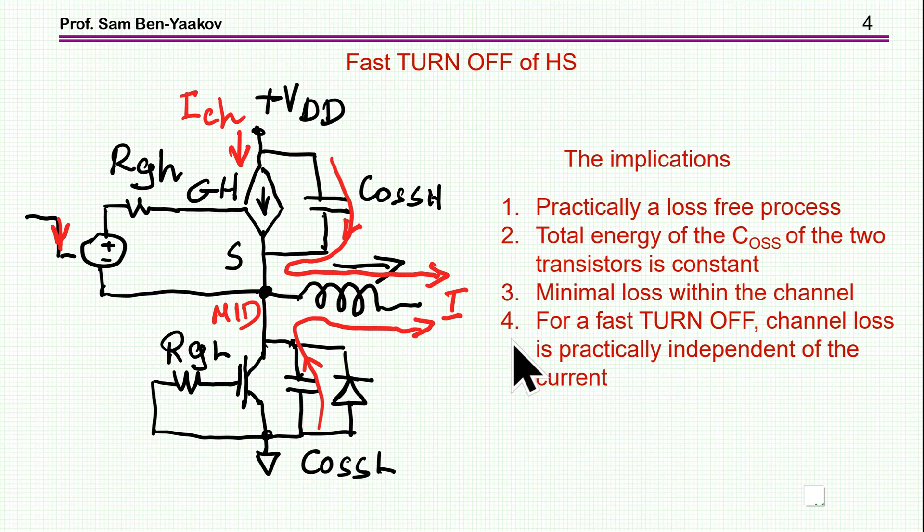For a fast turn-off, there is practically no losses in the process. Total energy of the two capacitors is the same because one is charging and one is discharging. There is minimum loss within the channel and for a fast turn-off, channel loss is practically independent of the current.